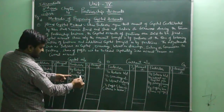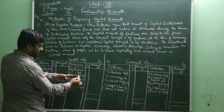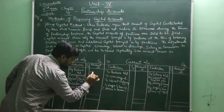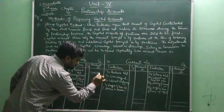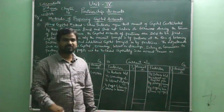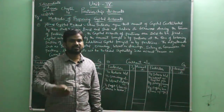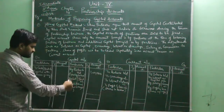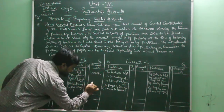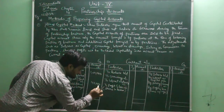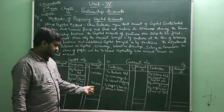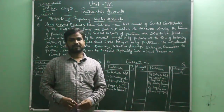By balance brought down is the opening balance. When a partner invests in the business, for example, a partner has invested rupees 1 lakh — it will be shown as rupees 1 lakh. If he has also invested additional capital of rupees 40,000, it will be shown as 'by cash or bank account' — additional capital brought in by the partner. So the capital account shows the amount invested at the time of becoming a partner and any additional capital introduced during the business.